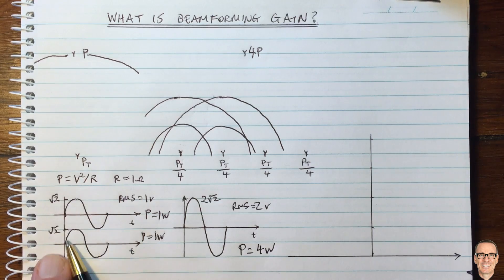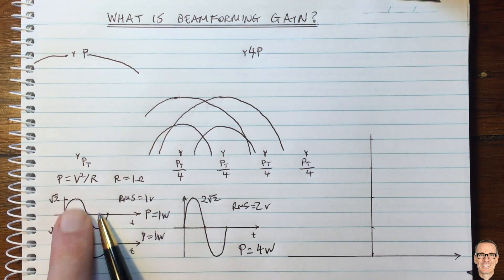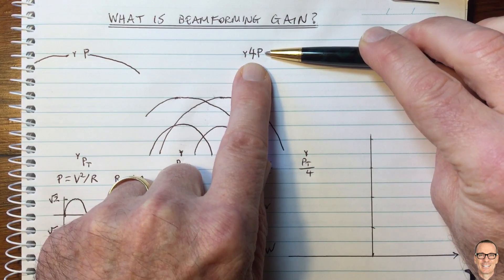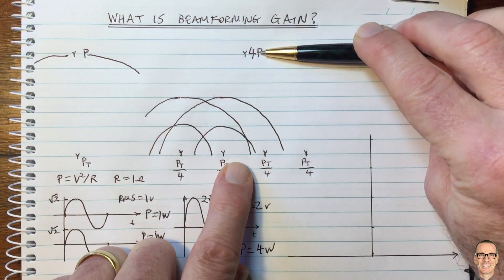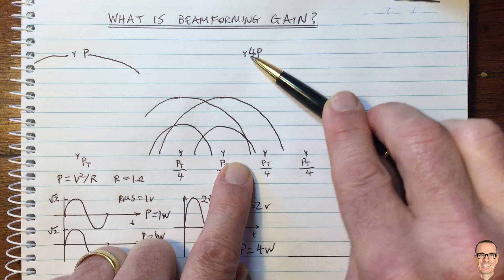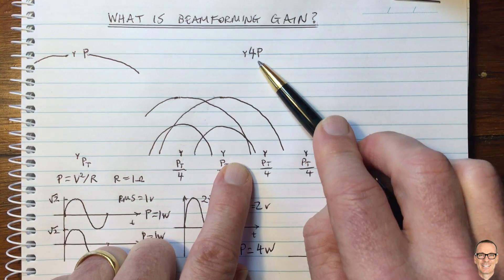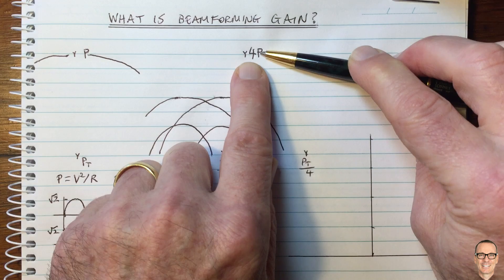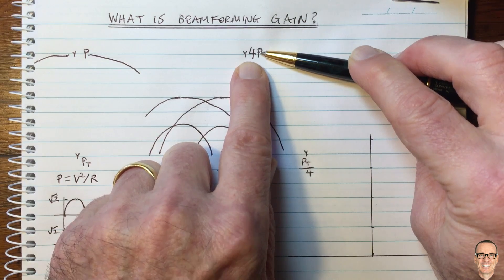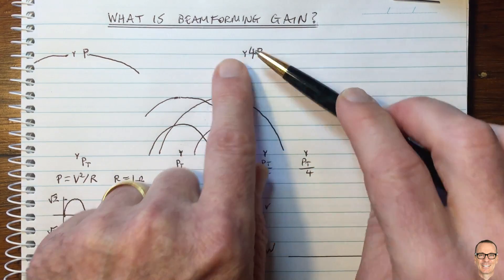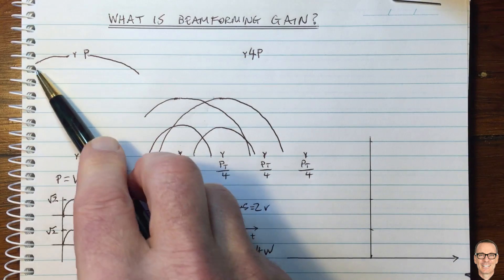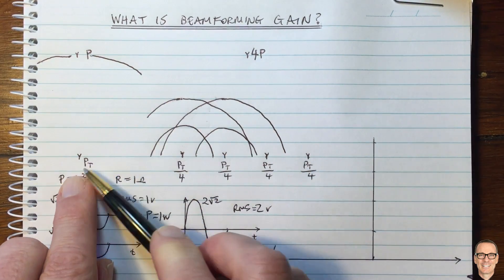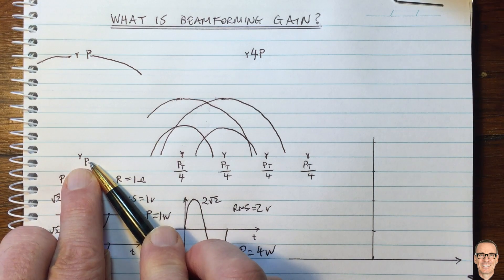Exactly because each one is transmitting a sinusoidal waveform like this — when it's four, you're going to get four times P side on to the array. So this is the gain. But what about the conservation of energy? Surely we can't receive more power at the receiver. And in fact, we don't receive more overall. You have to add up the power being received in all directions to equal the power that was transmitted in total.